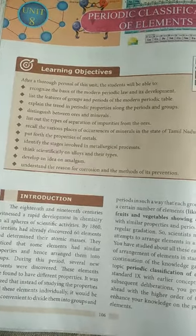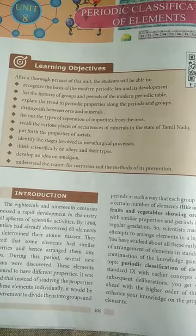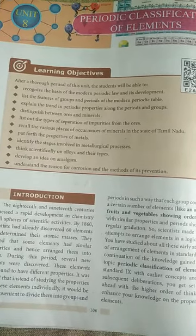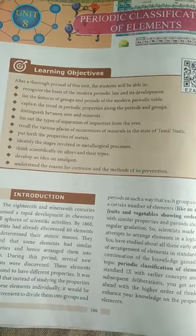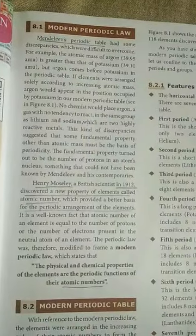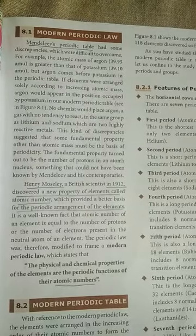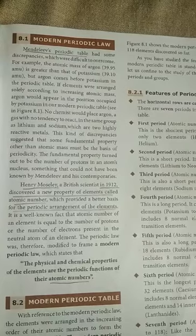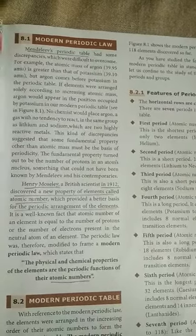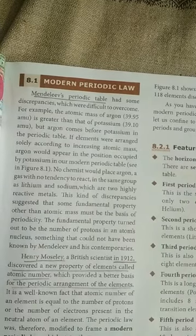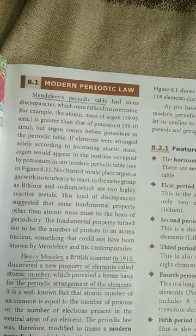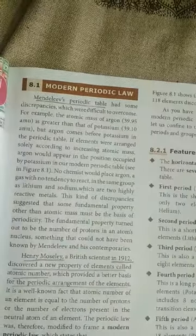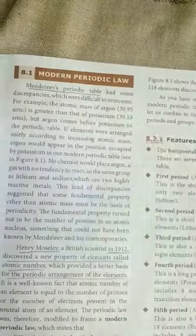Various scientists proposed their ideas about arranging elements. Many scientists contributed ideas, but the key development was Mendeleev's periodic table. However, Mendeleev's periodic table had some limitations which were difficult to overcome.